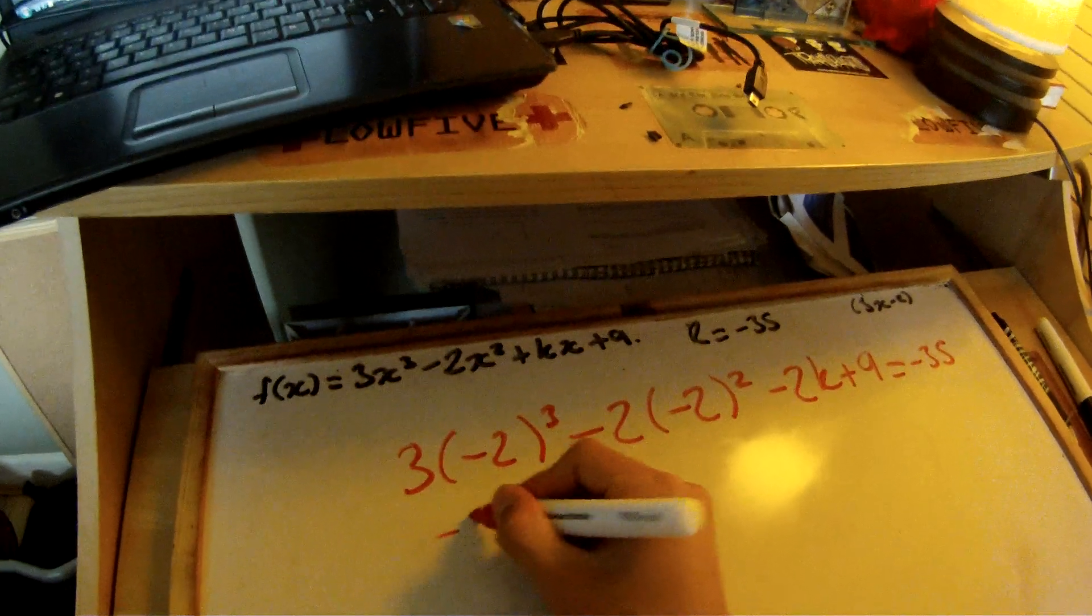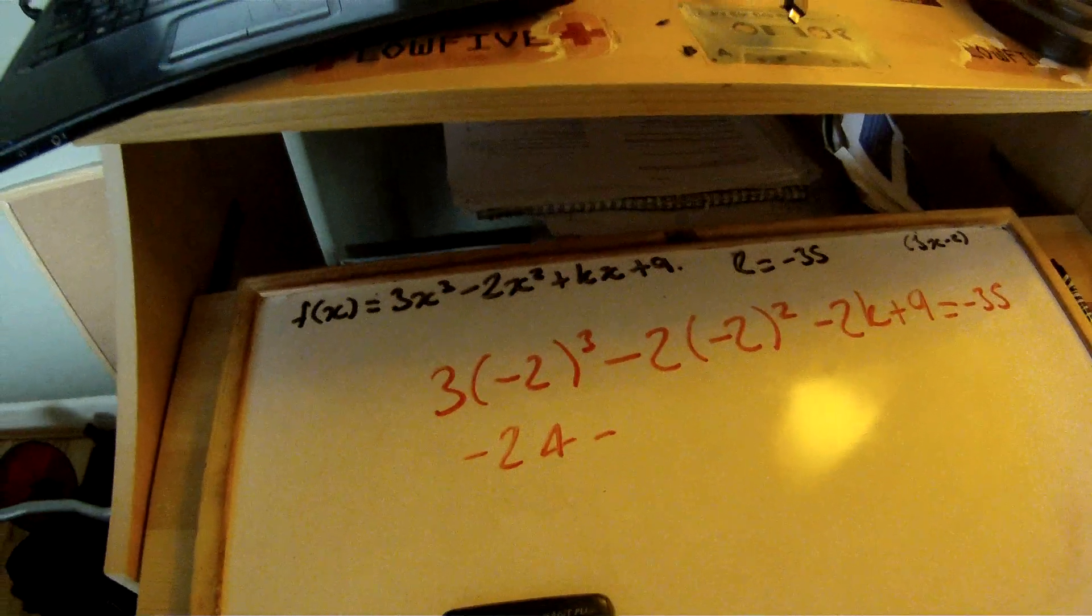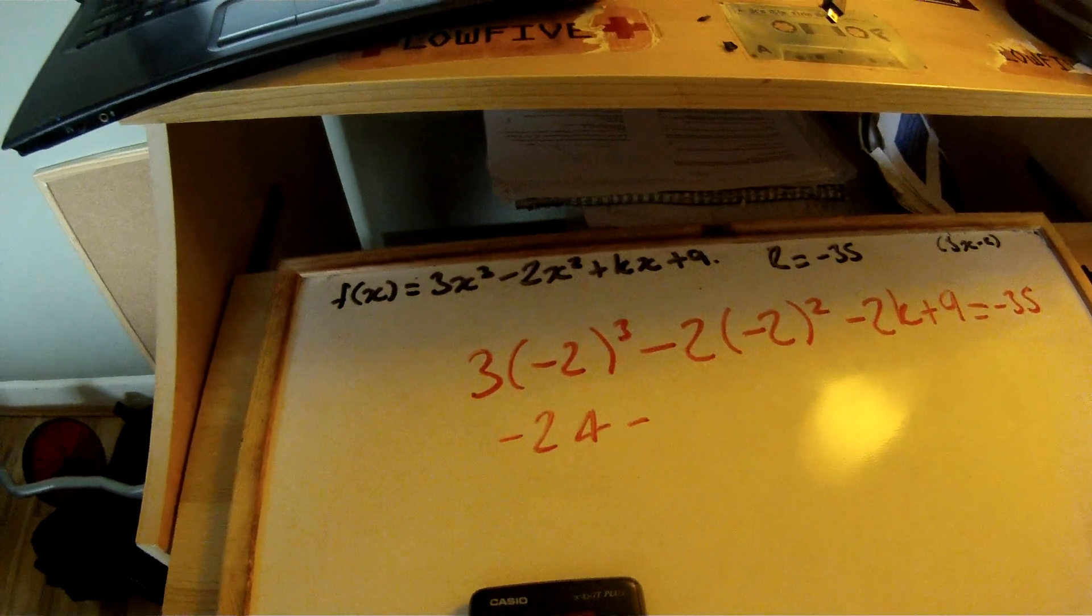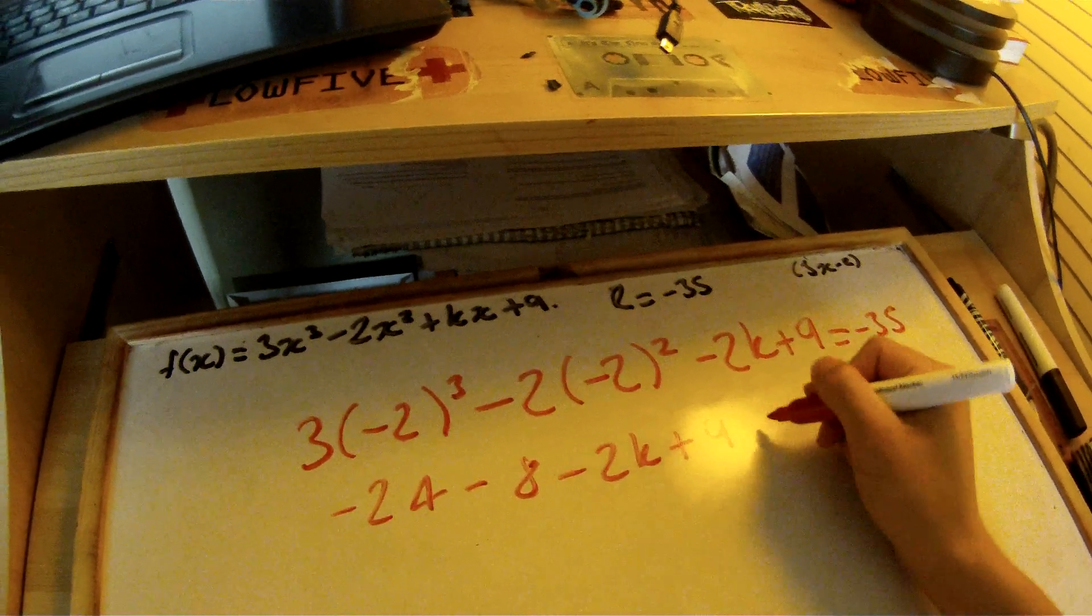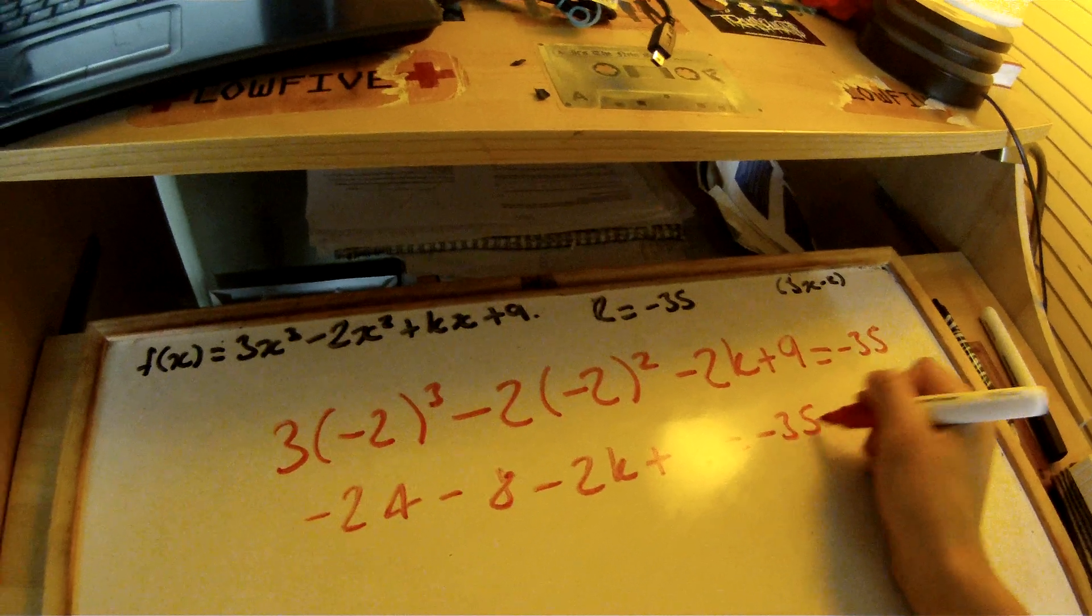You get minus 24 minus 8 minus 2k plus 9 equals minus 35.